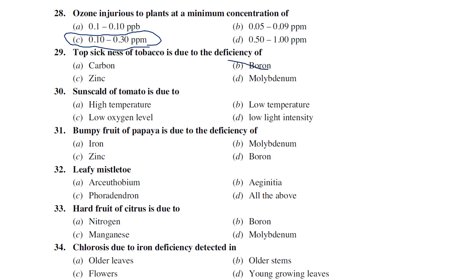Top sickness of tobacco is due to boron deficiency. Among carbon, boron, zinc, and molybdenum, the answer is boron.